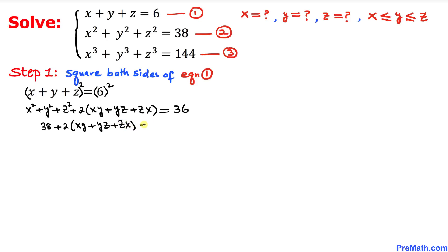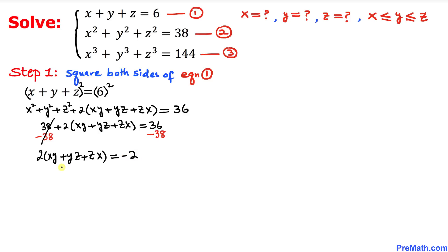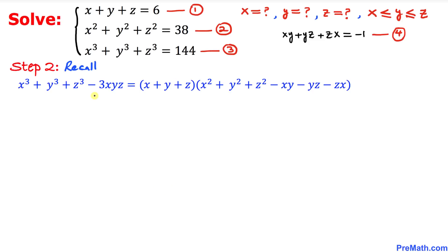We now have 38 + 2(xy + yz + zx) = 36. Subtracting 38 from both sides gives 2(xy + yz + zx) = −2, so xy + yz + zx = −1. We call this equation number four.